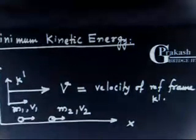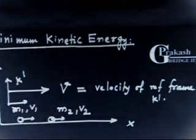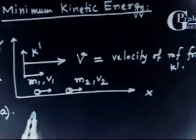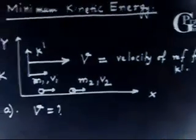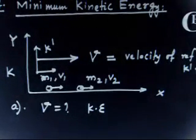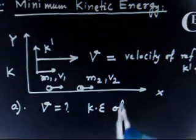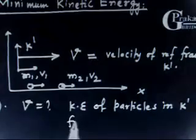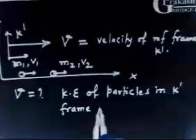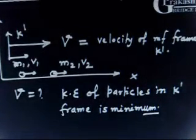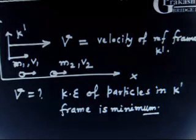Specifically, we need to find the velocity V of reference frame K' such that the cumulative kinetic energy of these particles is minimum. So the first part of the question asks: what should be the velocity V of K' so that the kinetic energy of the particles in the K' reference frame is minimum?